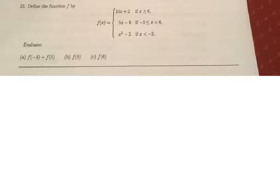So the question is asking us to evaluate f of negative 4 plus f of 5. All we have to do is decide where is f of negative 4. We know f of negative 4 is less than negative 3, so we just substitute that in there. This becomes negative 4 squared minus 2, which gives me 16 minus 2, which is 14. So f of negative 4 is 14.